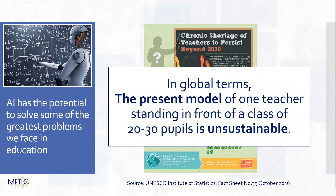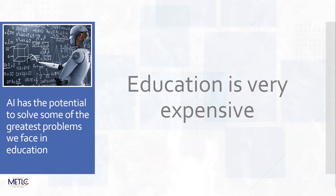This model that we have globally of teachers standing in front of 20 to 30 students isn't sustainable. The second problem is that education is very expensive - it's expensive for parents as you know in Dubai, every parent having to pay school fees, and it's expensive for governments as one of their biggest costs. Any solution that can reduce the cost of education is going to be welcomed by parents and governments alike, but perhaps not by teachers around the world.